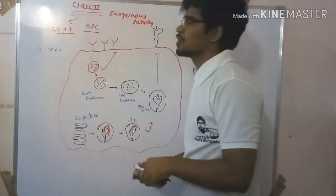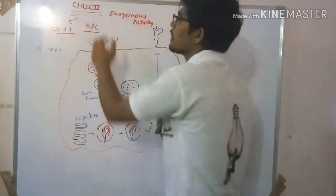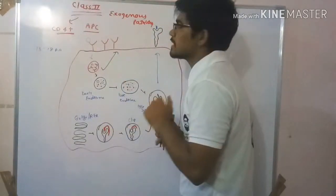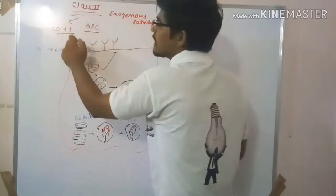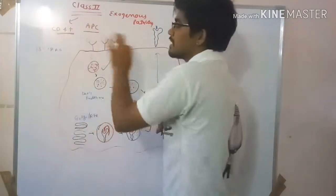Hello friends, in today's lecture we are going to talk about the exogenous pathway for antigen presenting in class 2 MHC. It presents antigen to CD4+ cells and is only present in APC cells.